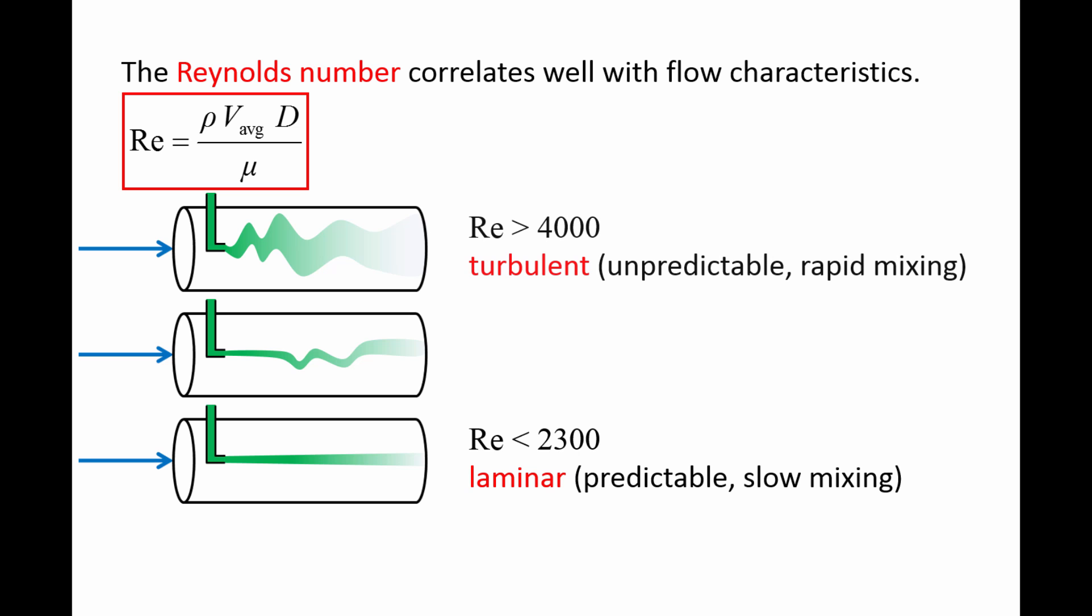The top pipe shows typical behavior of flows where the Reynolds number is greater than 4000. We call these types of flows turbulent, and they are unpredictable and mix rapidly.